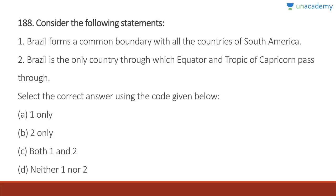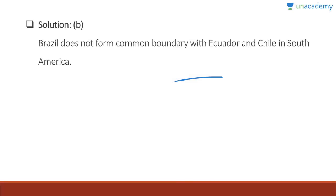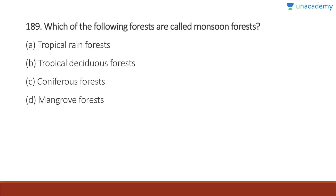Question 188: Brazil forms a common boundary with all countries of South America — wrong, it does not share a border with Ecuador and Chile. Brazil is the only country through which both the equator and the Tropic of Capricorn pass — absolutely correct, because it is huge. Answer is B, two only.